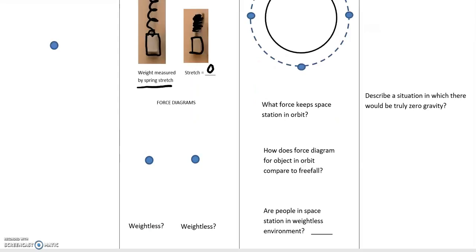So it's up to you now. Make force diagrams for each of these situations. First, the object is the mass and make a force diagram when it's suspended by the spring, and make a force diagram for the mass when it's falling with the spring. And then yes or no, would you consider the mass weightless in the first situation or the second situation?